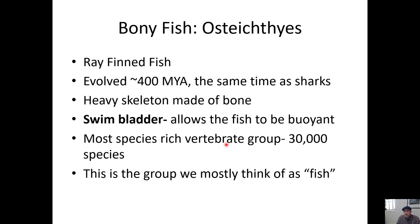They have a skeleton made of bone. They have a swim bladder, which allows them to be buoyant — it's like a bag filled with gas that allows them to float and maintain buoyancy in the water column. This swim bladder in some groups may have evolved into lungs, like in the lungfish. Of the vertebrates, this is the most species-rich group, with over 30,000 species — more than mammals, more than reptiles.